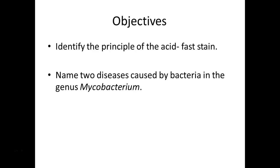There is a whole genus of bacteria called Mycobacteria that have this property. Just as the cell wall structure was responsible for differences in the gram stain, the cell wall accounts for acid-fastness here. In addition to peptidoglycan, these organisms have a very waxy layer called mycolic acid. This waxy layer is what causes the carbol fuchsin to stay bound even after acid-alcohol decolorization.